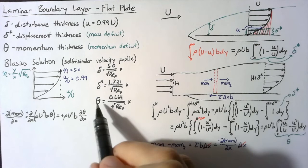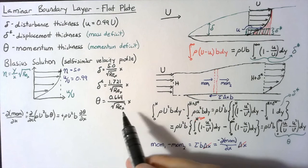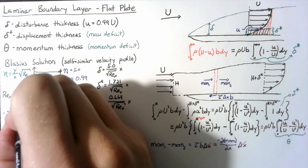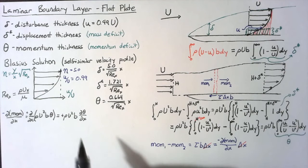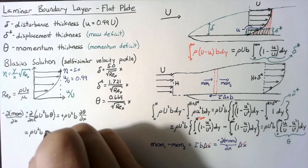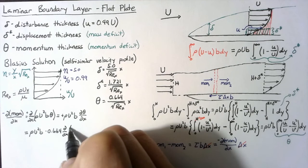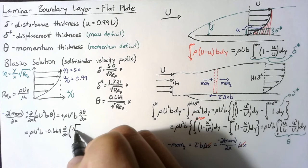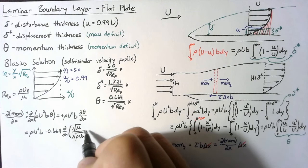Let's do a little bit of work to simplify this theta. We know that the Reynolds number with respect to x is equal to rho times U times x divided by mu. Plugging that in, we have more constants we can take away. This would be rho U² times b. Then we would have 0.664, with d/dx out here, multiplied by 1 over the square root of Re_x — which would be the square root of mu over the square root of rho U x — multiplied by x.